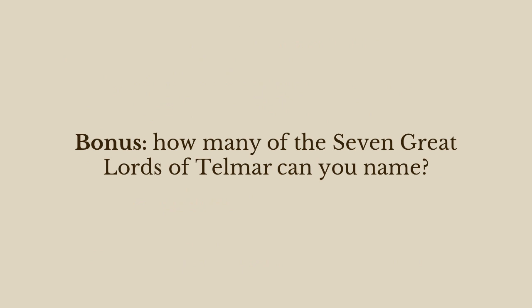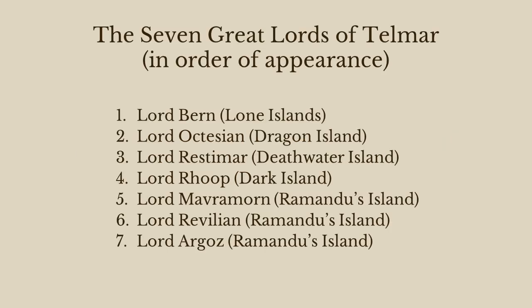I have a bonus question — this one's harder. You really have to know the book to know this. How many of the seven great lords of Telmar can you name? Zero? I'll just give you the list — this will help you understand the plot of the story. They first encounter Lord Berne on the Lone Islands. Then there's Lord Octesian, who was killed — we're not exactly sure whether he himself was turned into a dragon or was killed by the dragon on the island. That's left ambiguous. Then there's Lord Restimar, found on Deathwater Island. And then Lord Roop, Lord Mavramorn, Lord Revilian, and Lord Argoz.